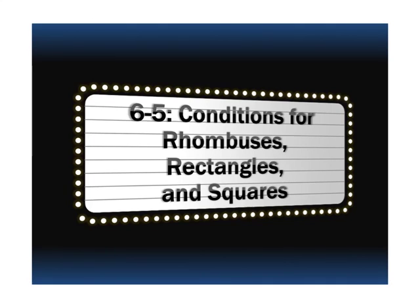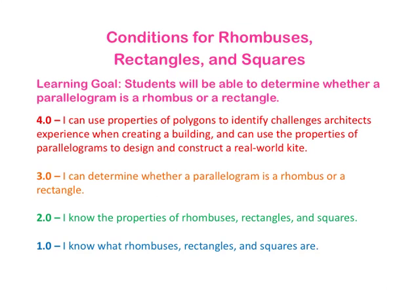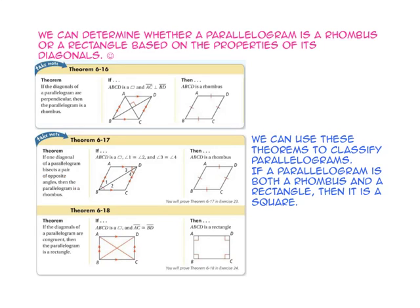Today's lesson is Conditions for Rhombuses, Rectangles, and Squares. Take a minute to read the learning goal on the scale and see where you are on the scale before we begin the lesson. We can determine whether a parallelogram is a rhombus or a rectangle based on the properties of its diagonals.